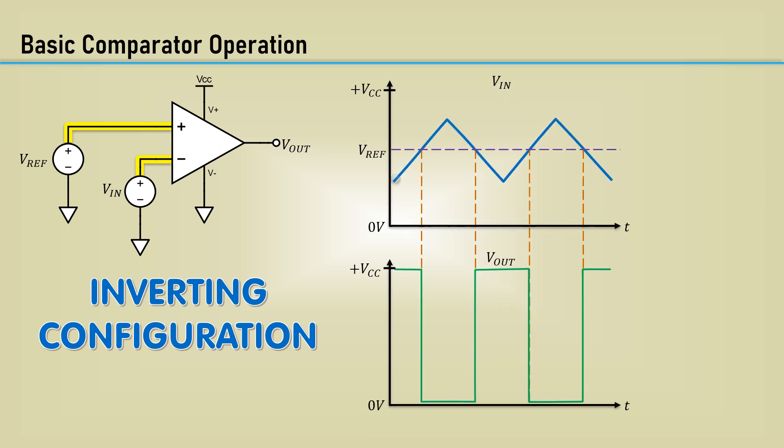When the input signal is higher than the reference, the output of the comparator goes low. You can think of the comparator as a 1-bit A to D converter.